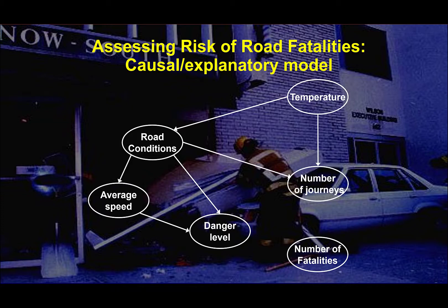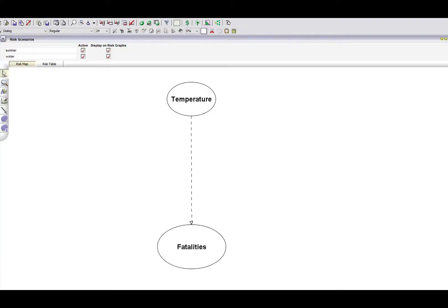Both the temperature and the road conditions also affect the number of journeys made. In the winter, when the weather and road conditions are bad, people make far fewer journeys. In the summer, with good road conditions and warm temperatures, people make lots of journeys. It's that combination of the number of journeys and the danger level which ultimately influences the number of fatalities.